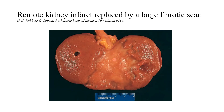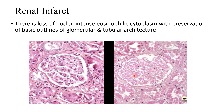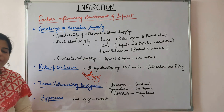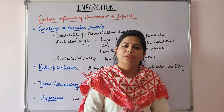A remote or old kidney infarct is shown replaced by a large fibrotic scar, which appears depressed compared to surrounding renal tissue. Microscopy of renal infarct shows preserved architecture of glomeruli and tubules but loss of nuclei and intensely eosinophilic cytoplasm. Micro photographs of myocardial infarction show the inflammatory response and dense collagenous scar replacing necrosed myocardial fibers.